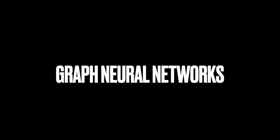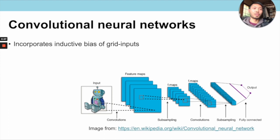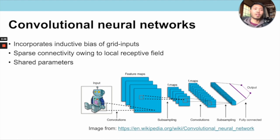To develop neural networks that deal with graph inputs, we first look at the convolutional neural network architecture, a historically important model. Unlike the multilayer perceptron, CNNs incorporate an inductive bias for inputs defined on grids such as images — the model is robust to translations, constructs features from local patches leading to sparse connectivity, and has shared weights resulting in far fewer parameters. Since grids are a type of graph, it makes sense to generalize the CNN architecture to arbitrary graph inputs.